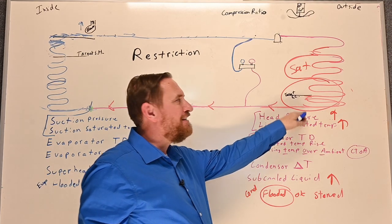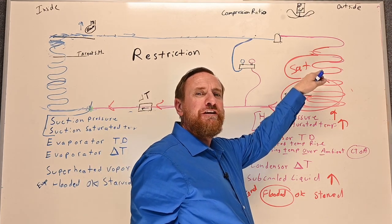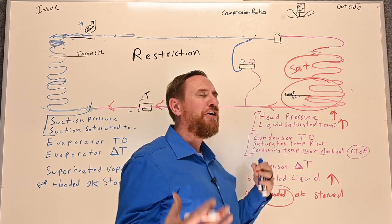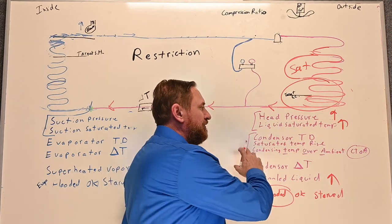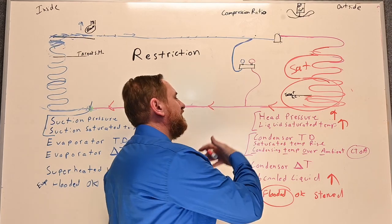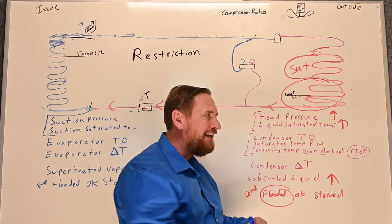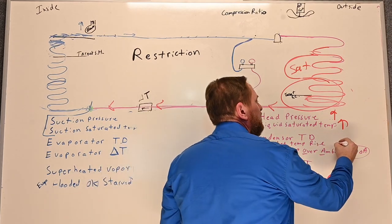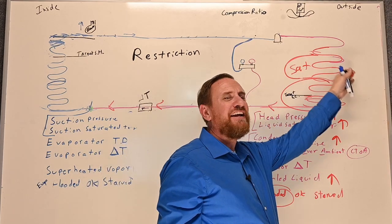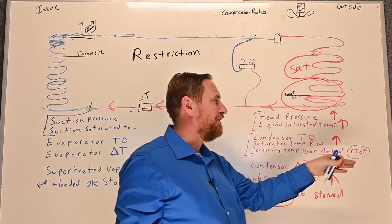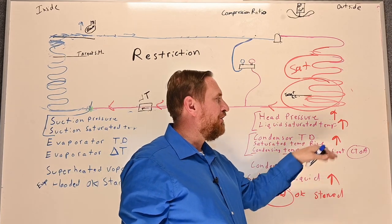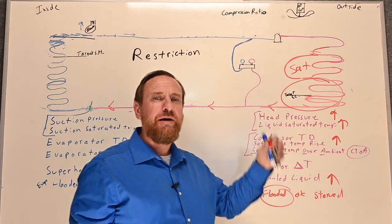The saturation has to transfer all that heat and change state from vapor to liquid in a much smaller area. The only way to make that happen is with higher pressure. So our pressure goes up, and our saturated temperature goes up to transfer heat in that smaller area. Because the saturated temperature goes up, the temperature difference between the refrigerant and the air gets much larger — the condenser TD, also called CTOA or condensing temperature over ambient, also increases. This is what you call high head pressure.